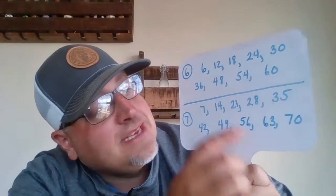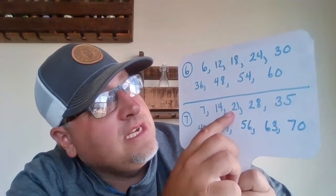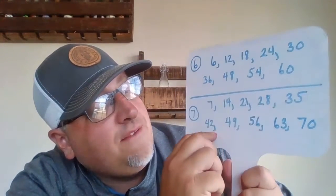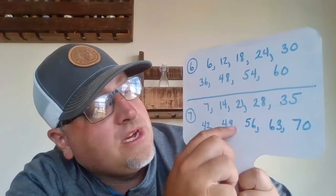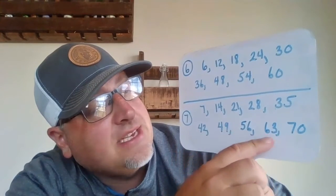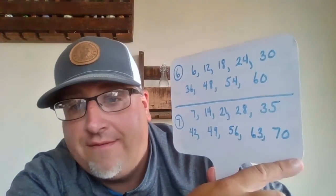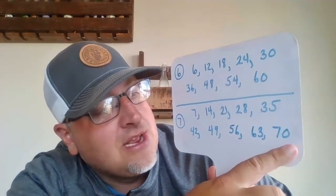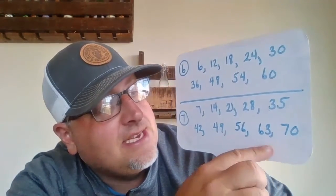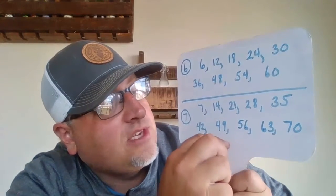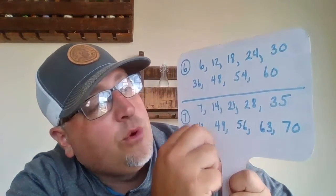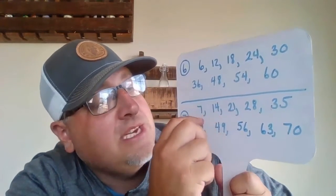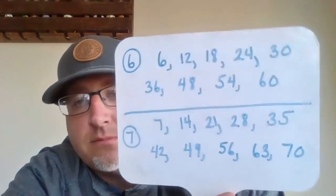Let's count by 7s. 7, 14, 21, 28, 35, 42, 49, 56, 63, 70. And backwards: 70, 63, 56, 49, 42, 35, 28, 21, 14, and 7.